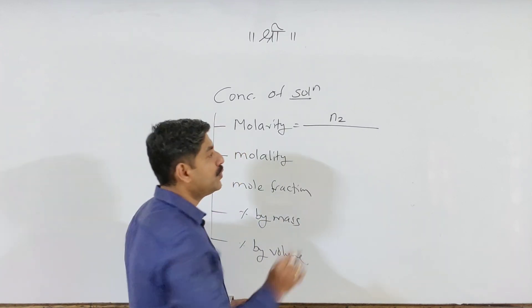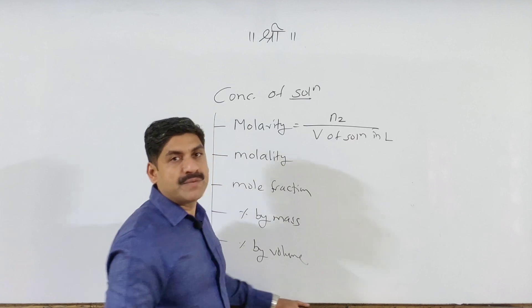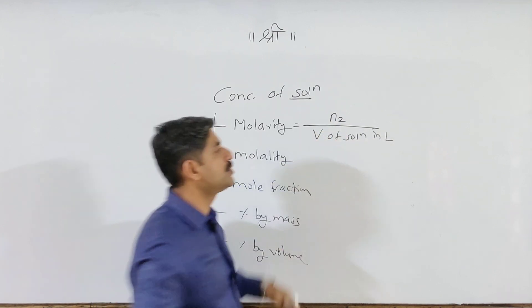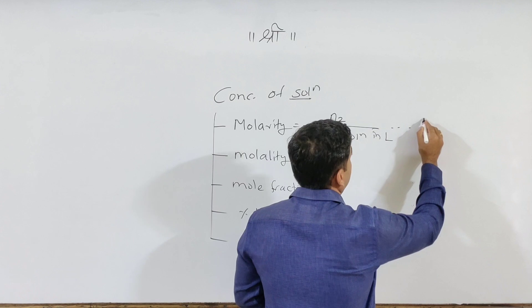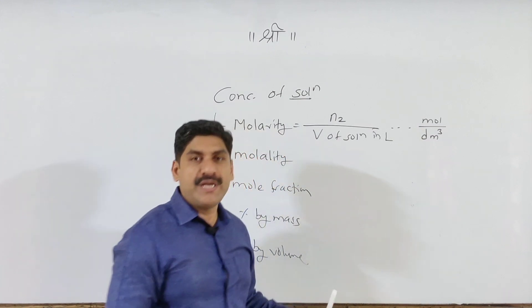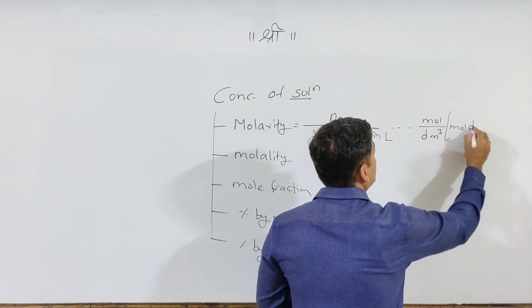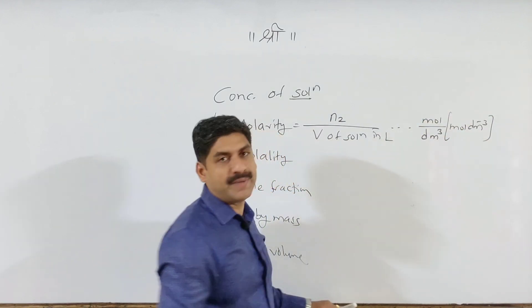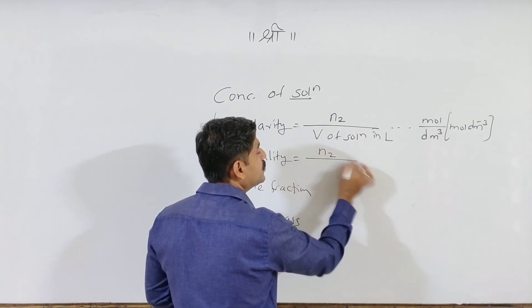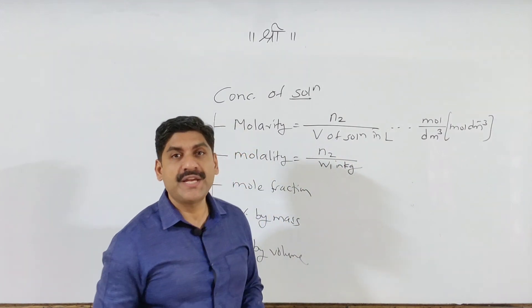n2 (molarity) means: number of moles of solute divided by volume of solution in liters. So, molarity is defined as: it is the ratio of number of moles of solute to the volume of solution in liter. Units are moles per dm³ — and dm³ means liter. You can also write it in brackets as mol dm⁻³.